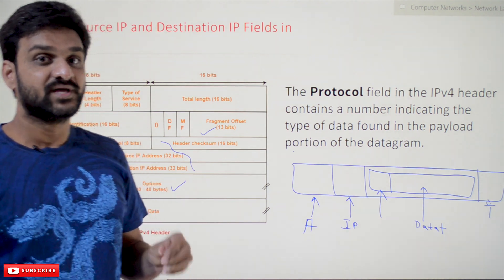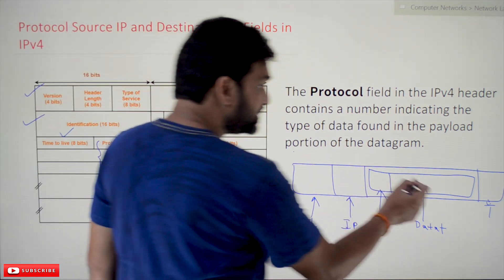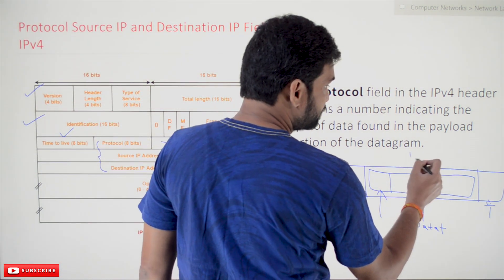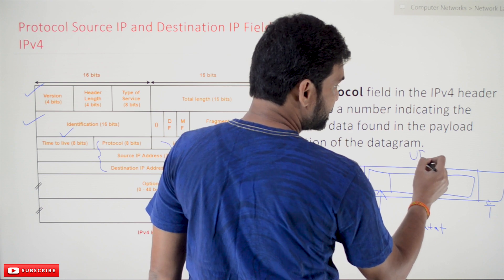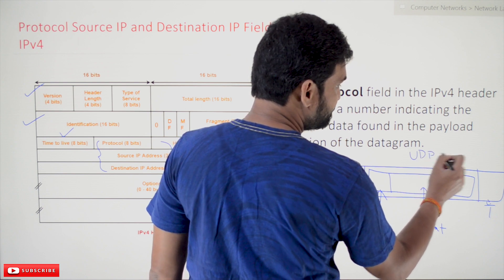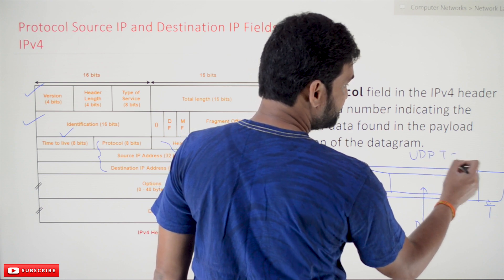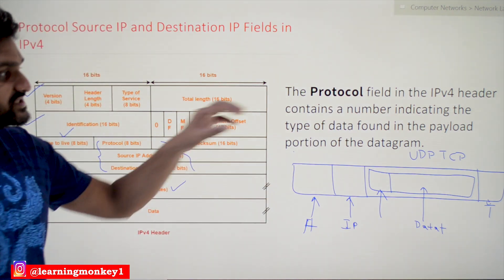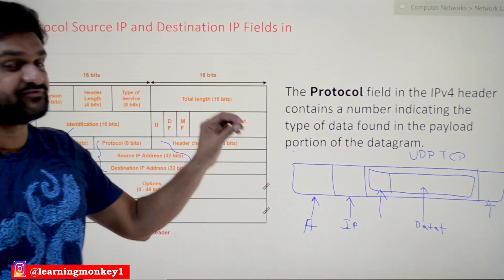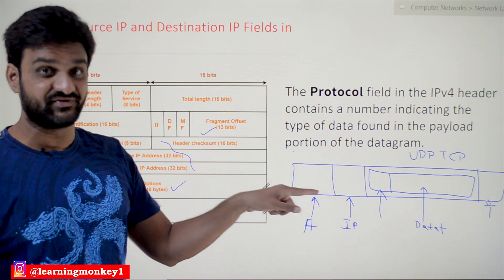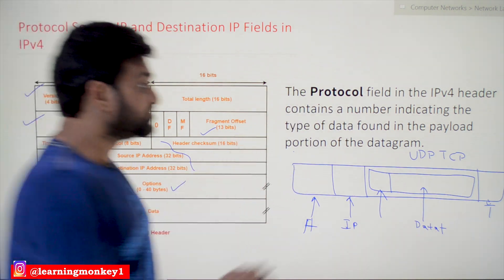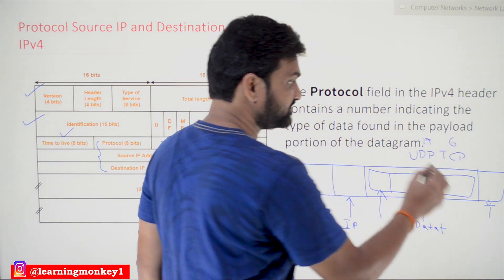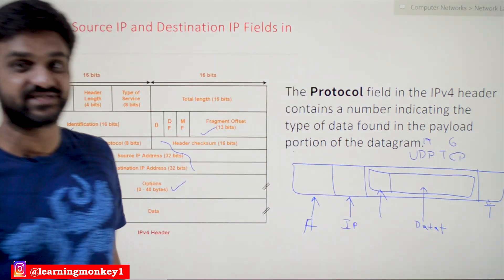In the transport layer we have two protocols: UDP and TCP. If it is TCP, it is represented by the number 6. If it is UDP, it is represented by 17.